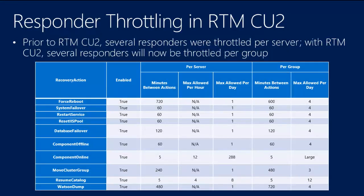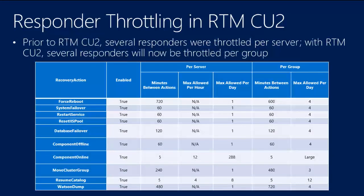We're expanding the per-group notion across all the built-in responders and even some of the specialized responders, like resume catalog. For resume catalog, we're saying we allow four resumes of that catalog per hour, throttled so that those four occur at least five minutes apart, and we only allow a maximum of eight times per server or 12 times per day in the DAG. For force reboot, we're allowing 600 minutes per action — so when we restart a server, we want at least 600 minutes before we force another server restart.